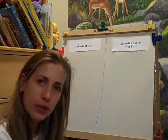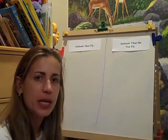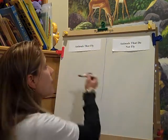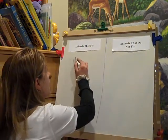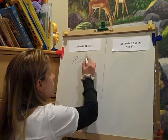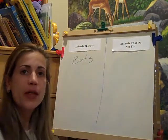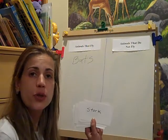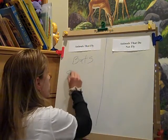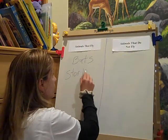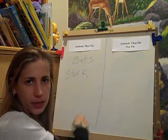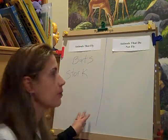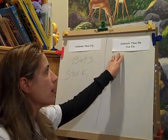I would call on the first student: 'Give me an animal — name an animal that flies.' Let's say they would say bats. I'd write it in the column under animals that fly. Then, 'Who can name another animal that flies?' Let's say another student chose stork — I would write stork under that column. I would go on until I had quite a few to make my list pretty varied, then I would move on.